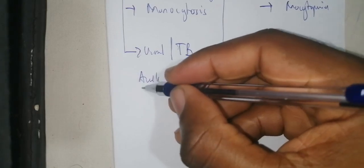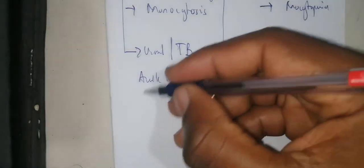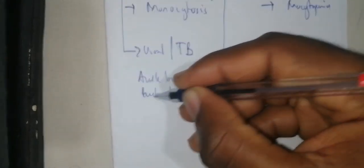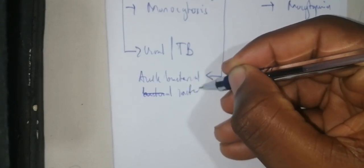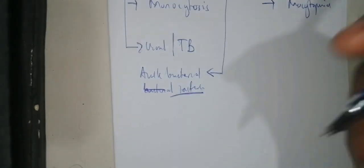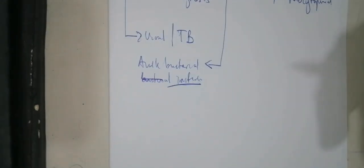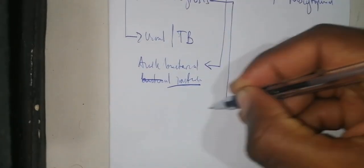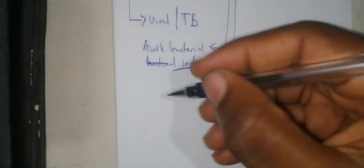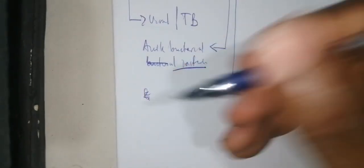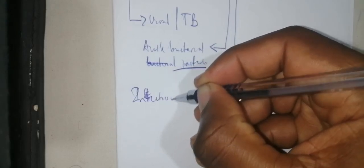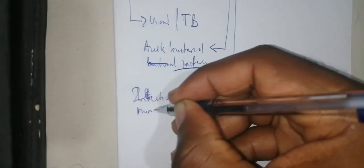Granulocytosis is generally associated with an acute bacterial infection. So if you have granulocyte predominance, it is generally an acute bacterial infection. The next one is monocytosis.